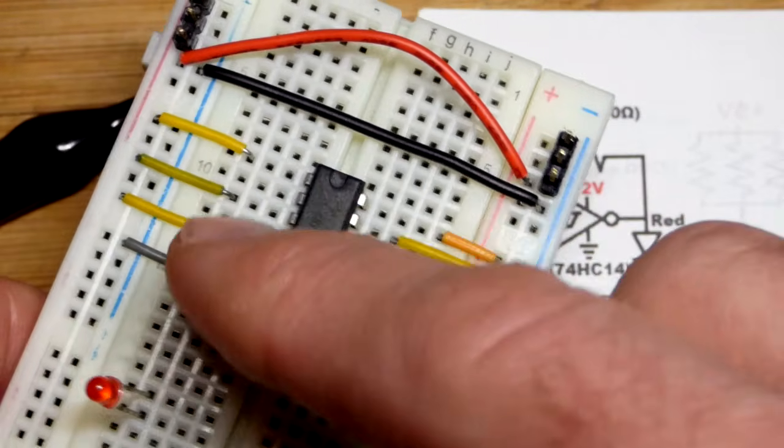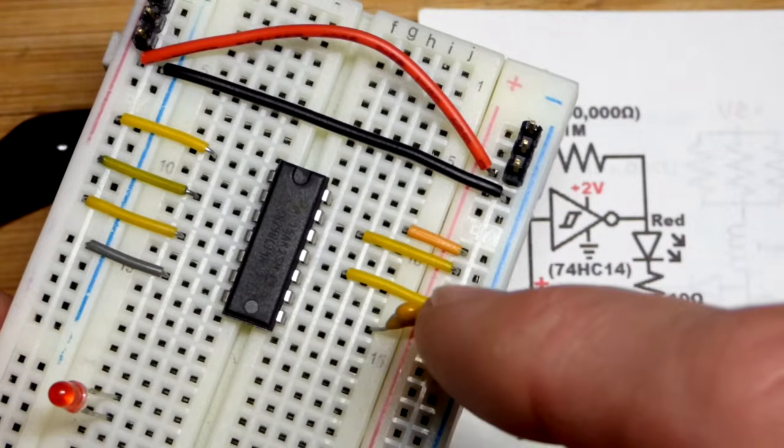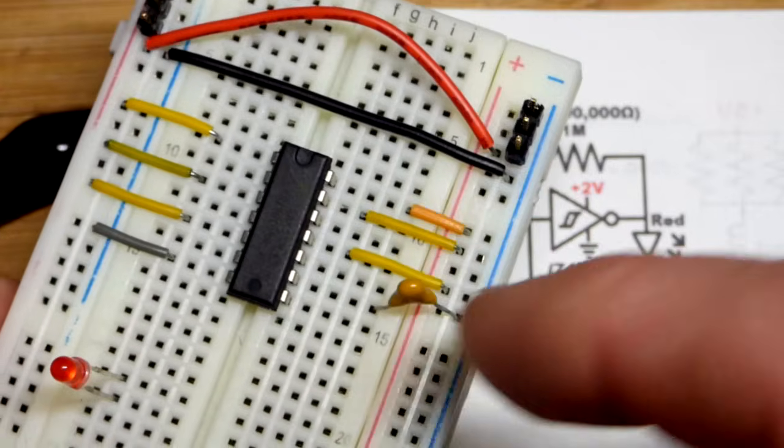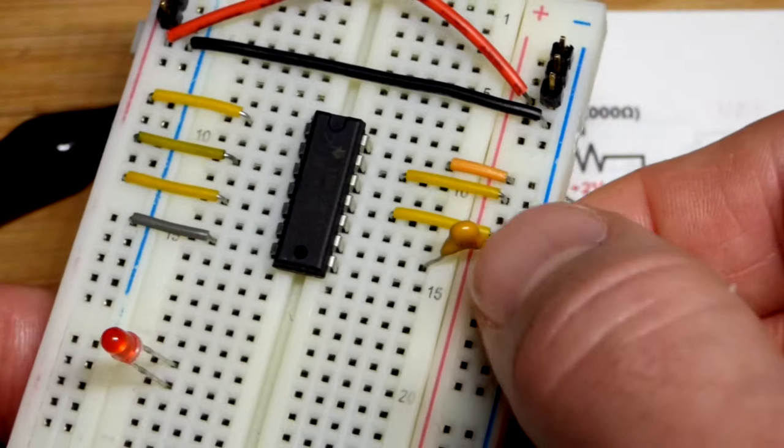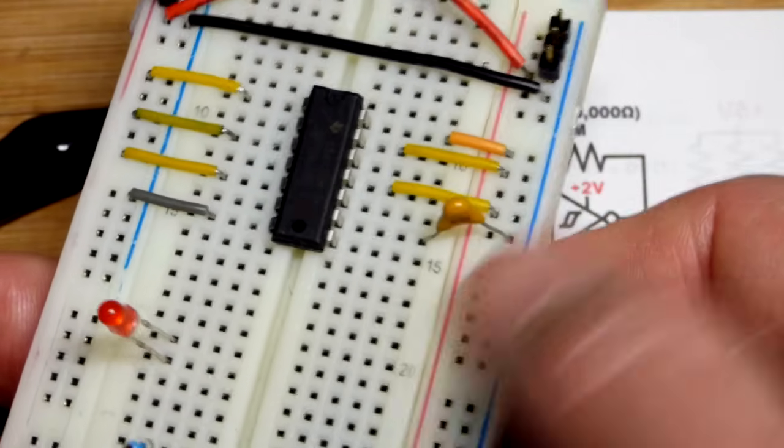We are not using those ones, so we tie their inputs to a voltage just to help stabilize things once we apply power. You can run into a lot of problems with these integrated circuits if you leave an input floating.